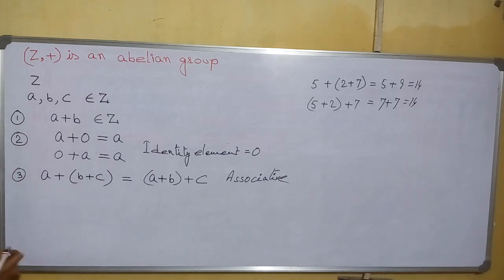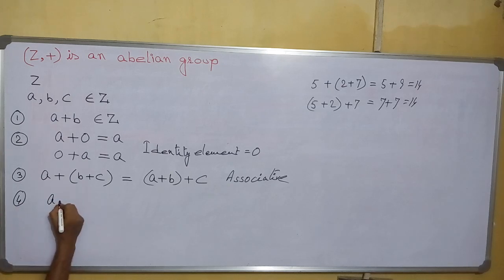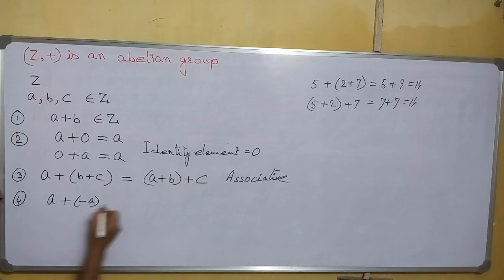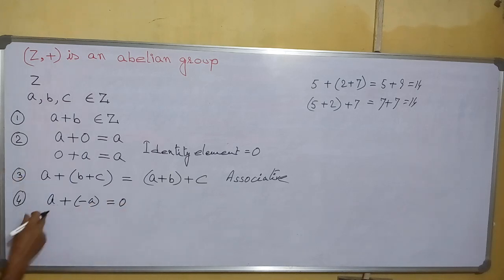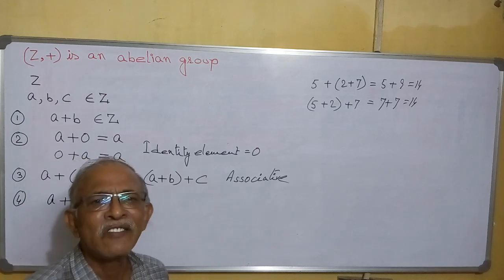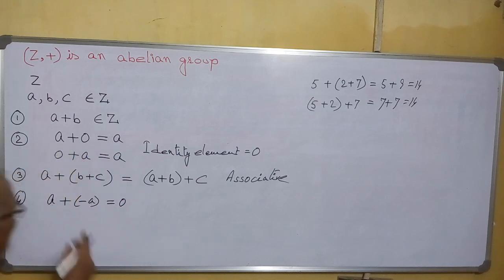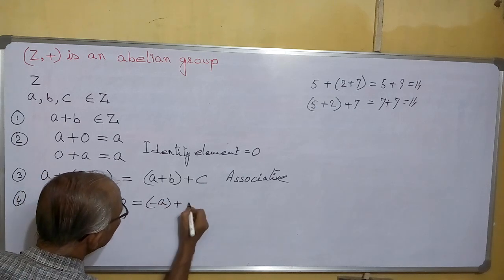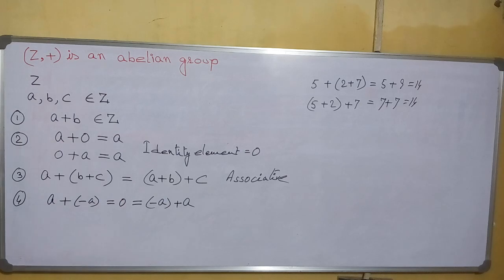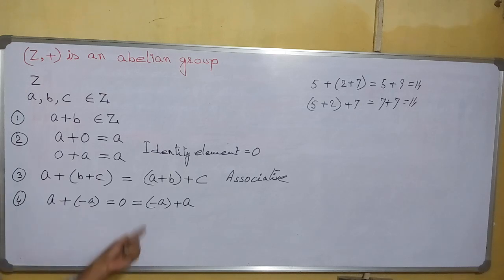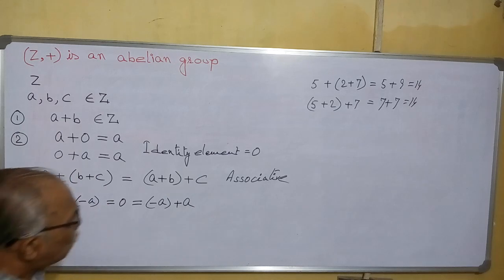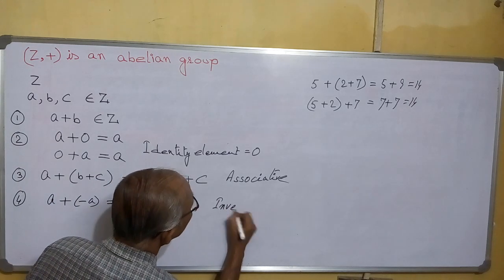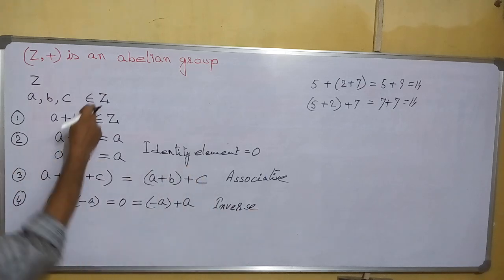Now we come to the fourth point — we have to find an inverse element. For any element A, A plus (minus A) equals 0. For example, 7 plus (minus 7) is 0, and 20 plus (minus 20) equals 0. It is also equal to (minus A) plus A. Hence, for each element A there is an inverse element minus A, and for each element minus A there is an inverse element A. So, an inverse element exists for all elements in the set of integers.